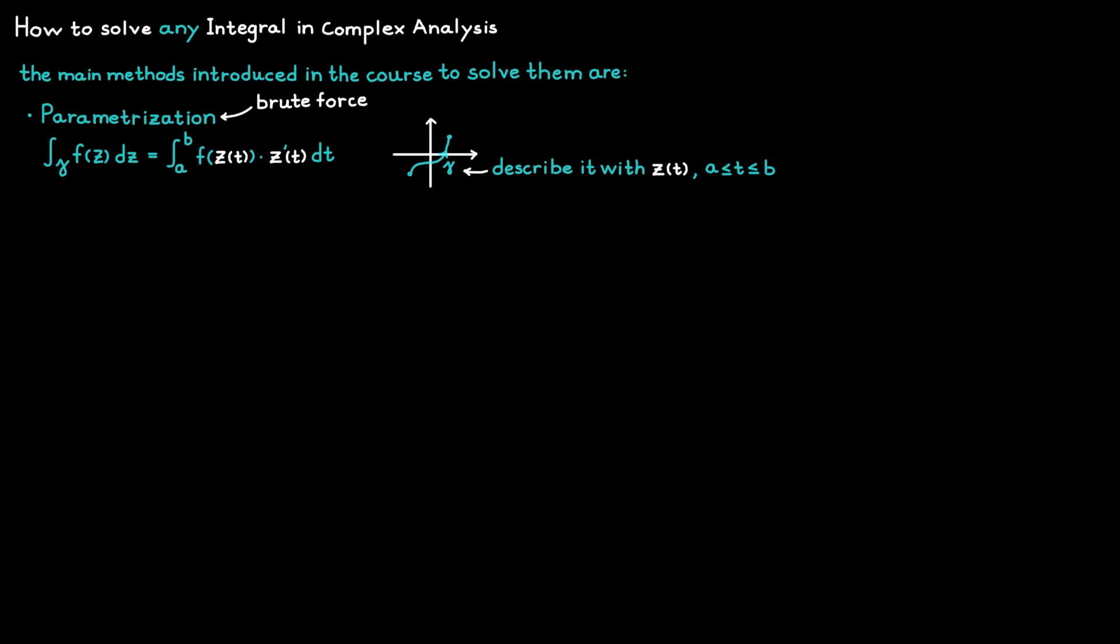A method that instead does not really care about the contour in question is our next method, the independence of path, which you might know better under the name the fundamental theorem of calculus. This method can only be used when you are dealing with a function that has an antiderivative on the contour gamma. But if this is true, then the method tells us that the integral will only be determined by the start and end points, and the path the contour takes between these two points is not important.